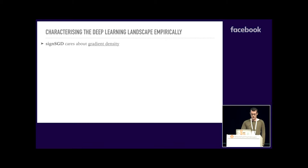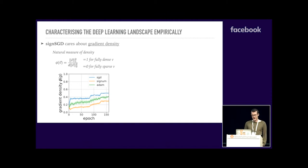So gradient density. We define the notion of density phi, which is exactly the one which our theory cares about: one norm divided by two norm. It's normalized by dimension. This is one for a fully dense vector and zero for a fully sparse vector. We measure this training ResNet 20 on CIFAR-10. Here we have gradient density phi plotted against epoch. And we see that for a range of algorithms averaged over repeats, the gradient is within a small constant factor of being fully dense throughout optimization. So this is supporting the idea that gradients are pretty dense in deep learning. So this suggests that SignSGD is a relevant optimizer theoretically.